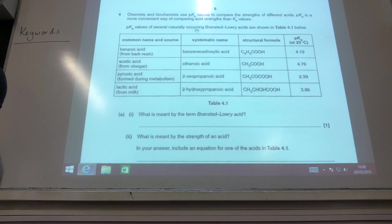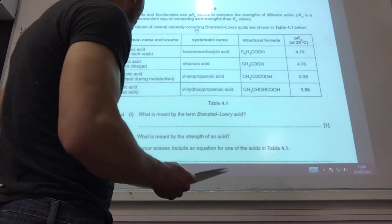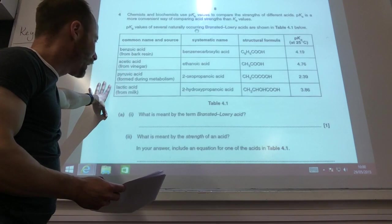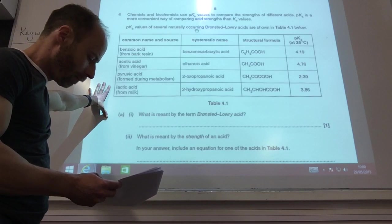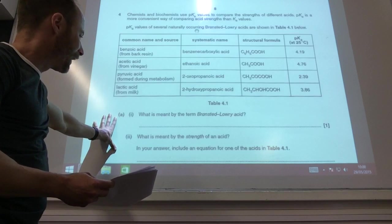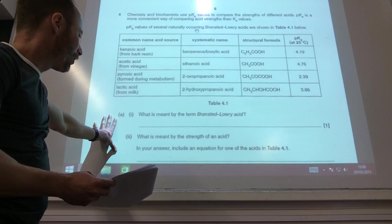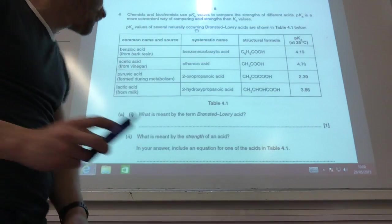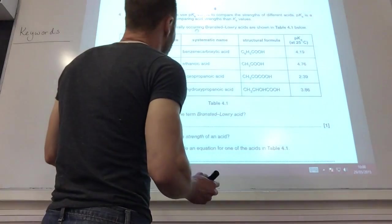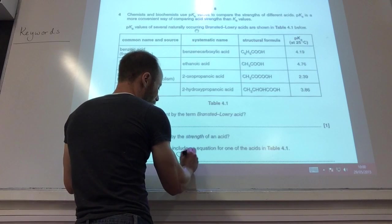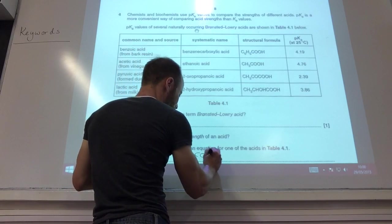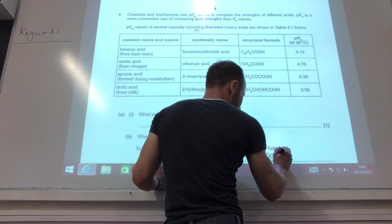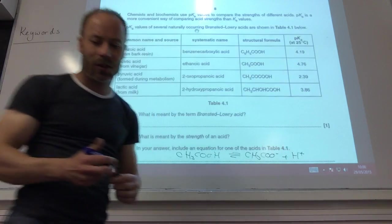We're now on to question 4. They've given me some names here and some pKa values. What is meant by a Brønsted-Lowry acid? It's a proton donor. What is meant by the strength of an acid? In your answer, include an equation of one of the acids. It is the degree to which an acid dissociates. If we did benzoic acid, for example, the degree to which this dissociation occurs in aqueous solution.